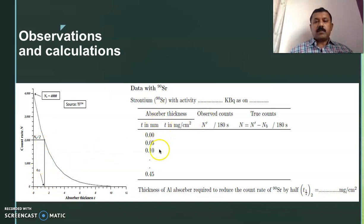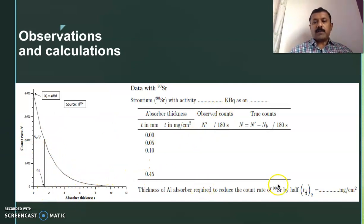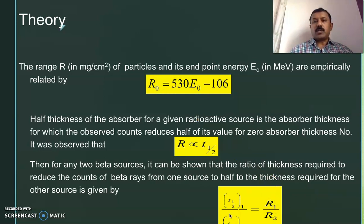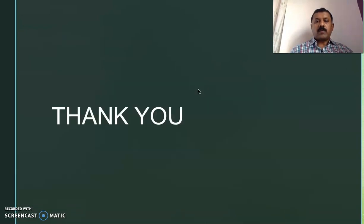Then repeat with Strontium, plot count rate as a function of absorber thickness, and determine its half-thickness T₂. Once you know both half-thicknesses, use the ratio formula T₁/T₂ = R₁/R₂. Since you know the energy for Thallium, calculate R₁, then calculate R₂. Substitute R₂ back into the range-energy equation to calculate the endpoint energy of beta particles in Strontium. That is how you perform this experiment. Thank you very much.